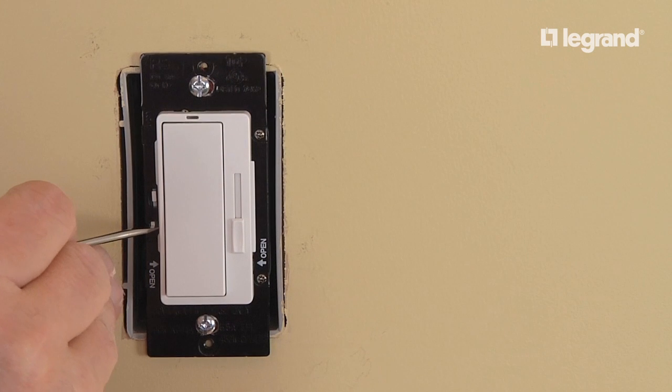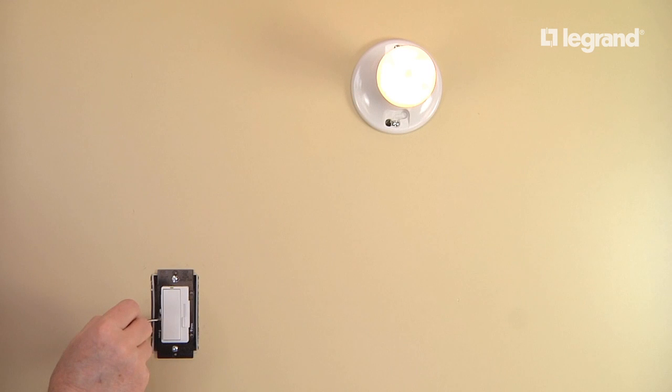While the LED locator light continues to flash, pressing the calibration button will cycle through 12 preset trim levels. When the desired minimum level is achieved, simply moving the slider will store the selected trim level and exit the manual calibration mode.